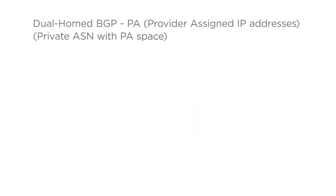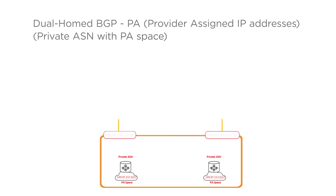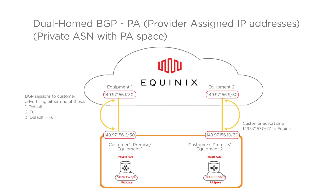Dual-home BGP, PA — provider-assigned IP addresses with private ASN and PA space. Here the customer needs the assignment from Equinix for both private ASN and PA space. Equinix provides two IPv4 /30s or two IPv6 /126s for configuration, free of charge. BGP policy is used to select default routes, full routes, or default plus full routes. Getting additional IP addresses from Equinix becomes mandatory using the POF EC additional IP addresses — IPv4 choices are /29, /28, or /27; IPv6 choices are /64 or /48.